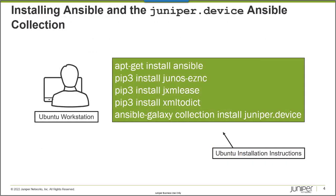For this Learning Byte, I used an Ubuntu workstation — this is what I use to manage my Junos platforms. Since it's an Ubuntu workstation, I use the apt-get utility to install Ansible. Python version 3 must already be installed. And then remember that the Juniper.device Collection leverages the Junos PyEZ Python Library to handle connecting to the managed devices.